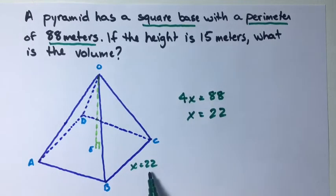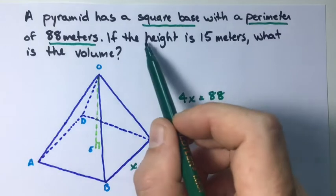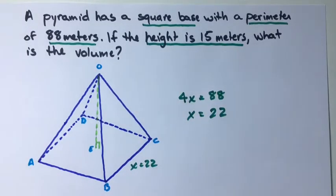So now we have the side length and we have the height of our pyramid, so we can find the volume.